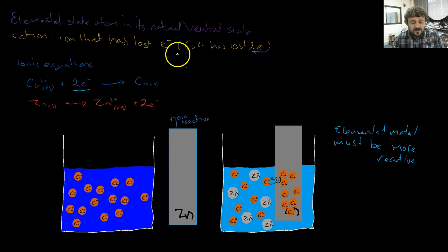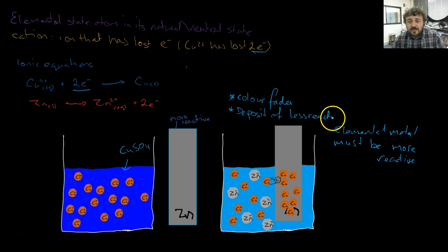So you've got that, and also what we'll notice is that the color, because we're talking about copper sulfate, so this is CuSO4. Now there is copper sulfate, the sulfate ions are in there but they stay right out of it. So the color fades, and the other thing we'll notice is that a deposit of less reactive metal forms.